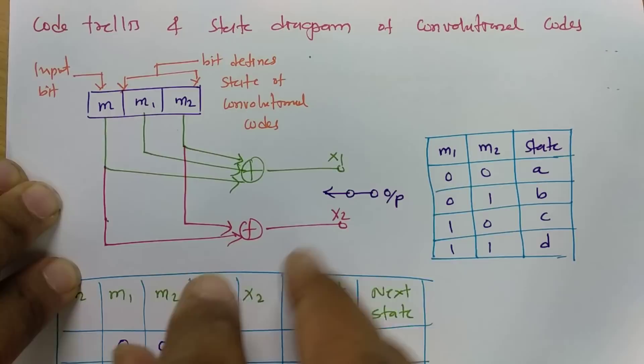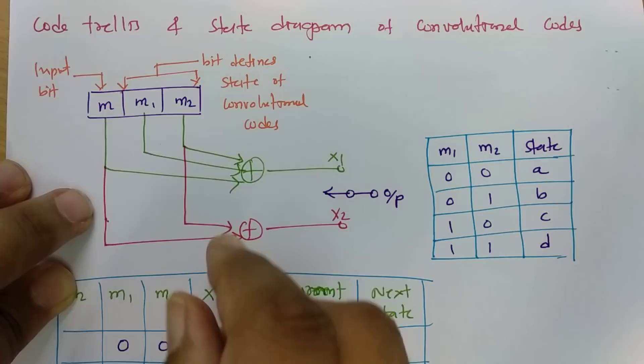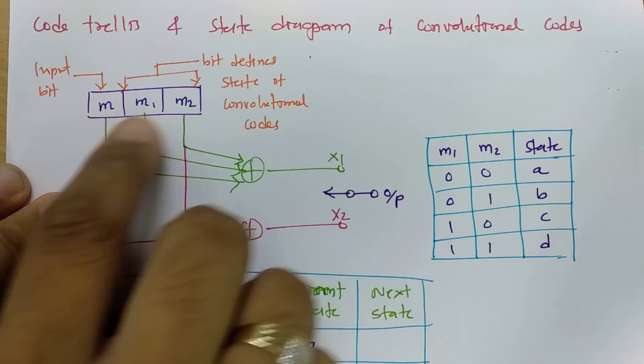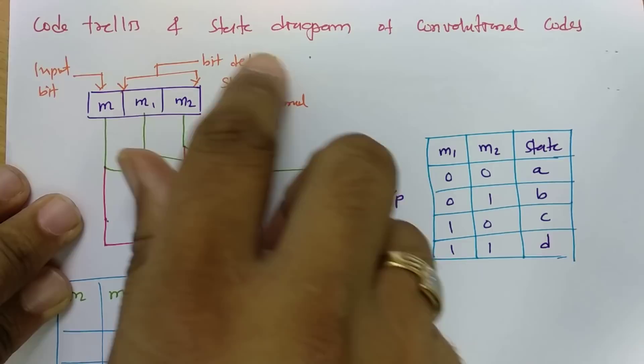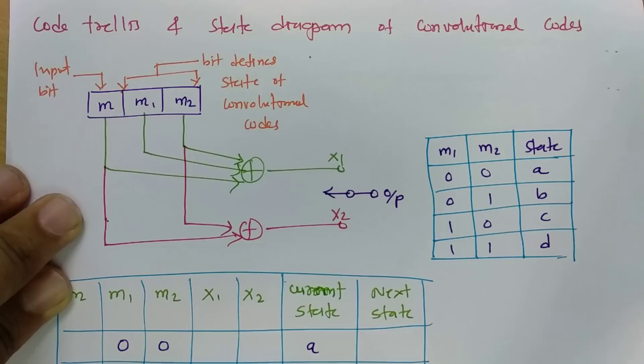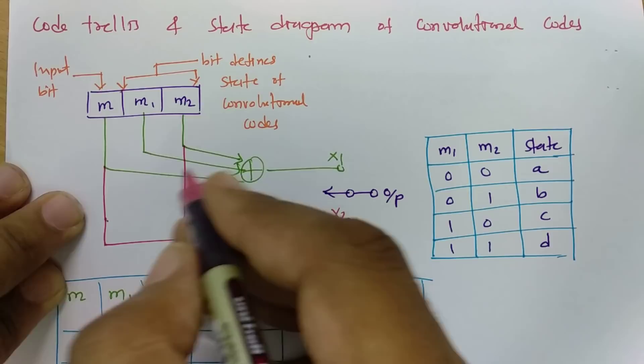I have already explained this convolution encoder in my previous session, so let us have a very quick recap. If you see the shift register, the first bit explains the input bit and the next bit explains the state of the convolution code. Here x1 and x2 are our outputs.